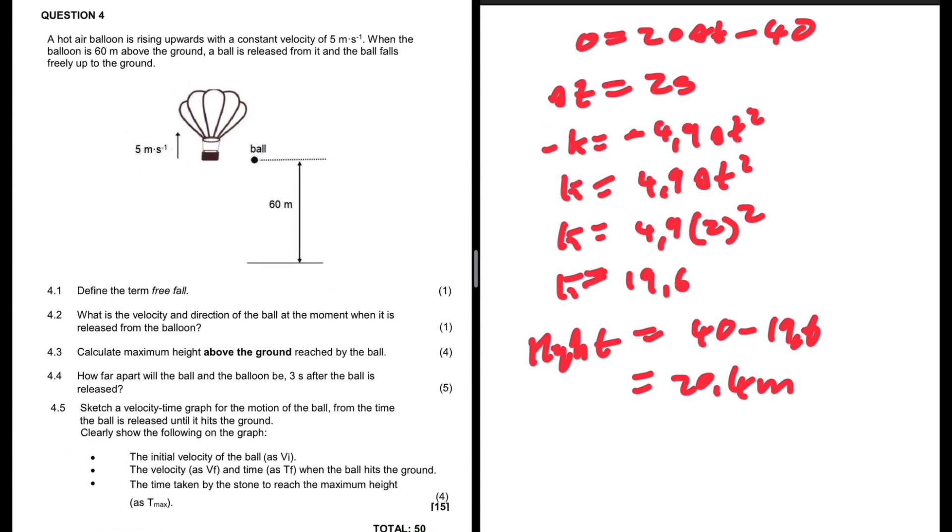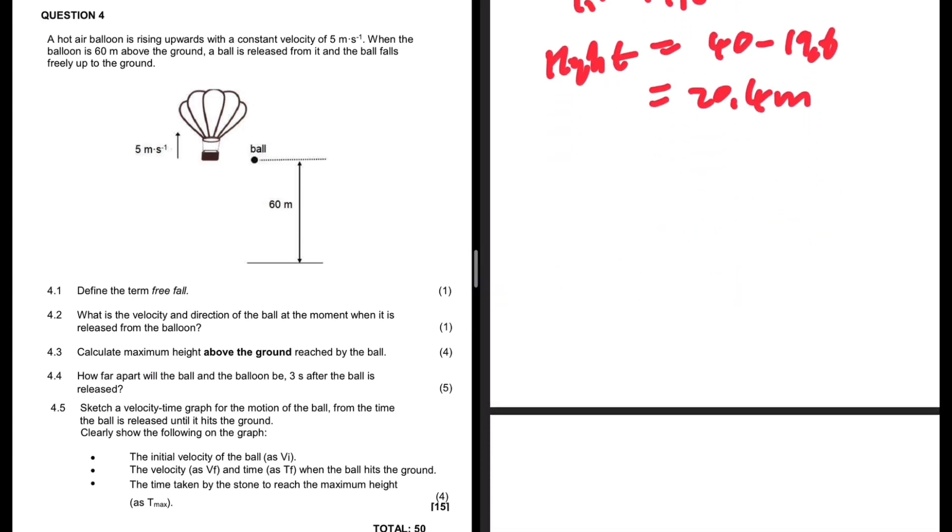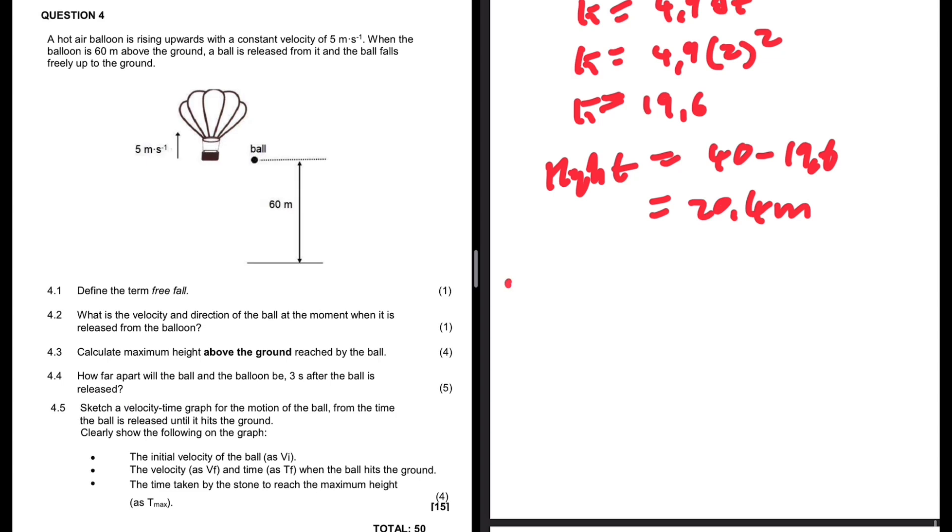What is the velocity and direction of the ball at the moment when it is released from the balloon? We've talked about this inside the course. The initial velocity of a ball in a balloon equals the velocity at which it is projected plus the velocity of the hot air balloon.